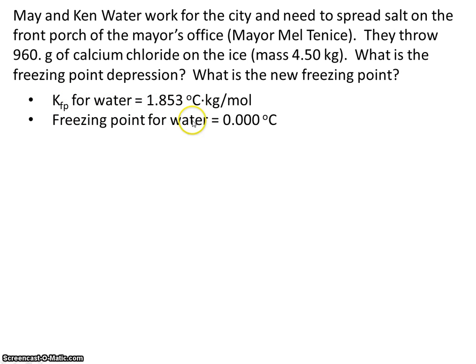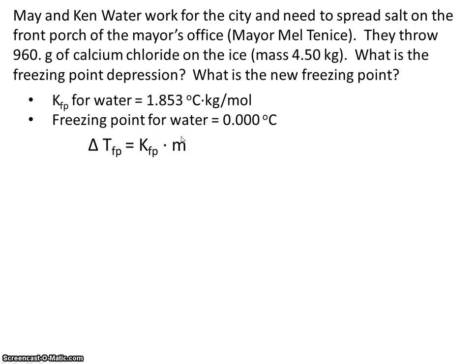This is the freezing point depression constant for water — it's this value here. And then we know the freezing point, of course, is 0 degrees Celsius. The freezing point depression equation is: ΔT = k × m. So let's go ahead and plug in what we know.